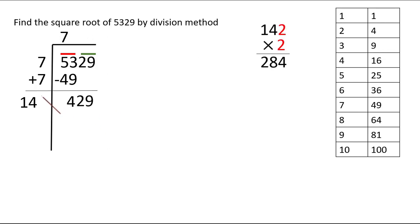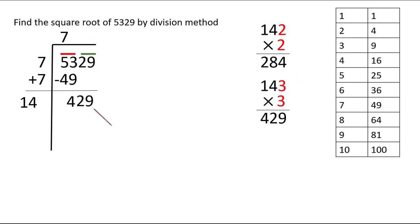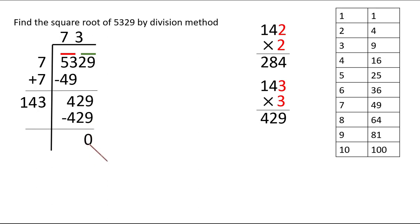For example, trying 2: 142×2 = 284, which is less than 429. Trying 3: 143×3 = 429, exactly equal to 429, so 3 works. We write 3 above and below. 143×3 = 429, and subtracting gives 0. Getting a zero means the end of division and finding the square root, which also tells us that 5329 is a perfect square with square root 73.